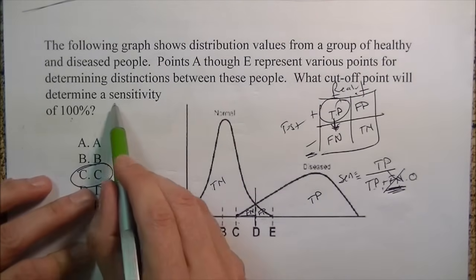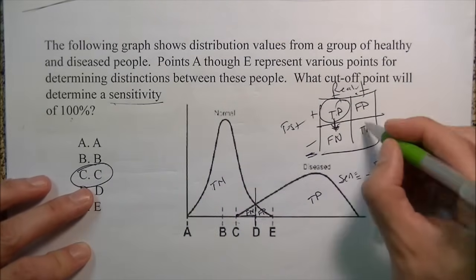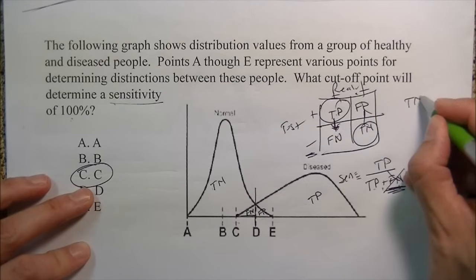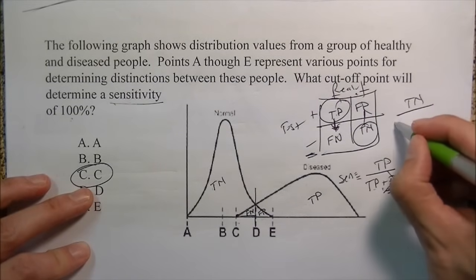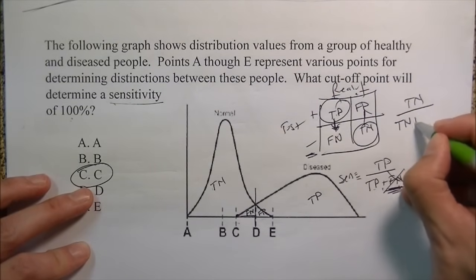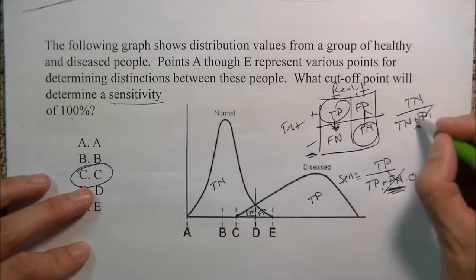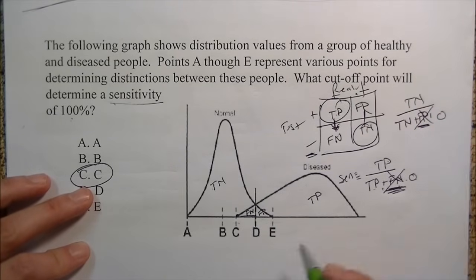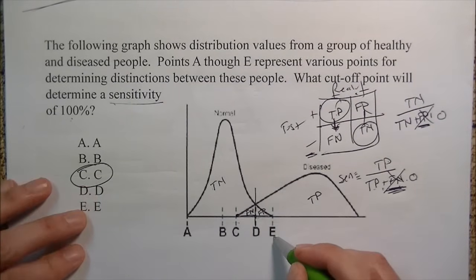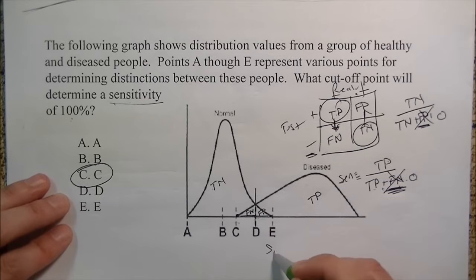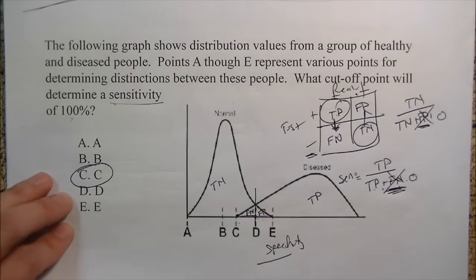If they asked for 100% specificity instead: specificity = true negative over (true negative plus false positive). To make false positives zero, you smash them by moving the cutoff the other way — that would be choice E.